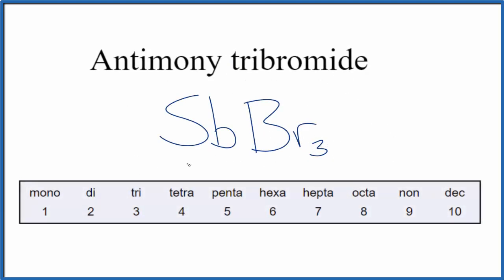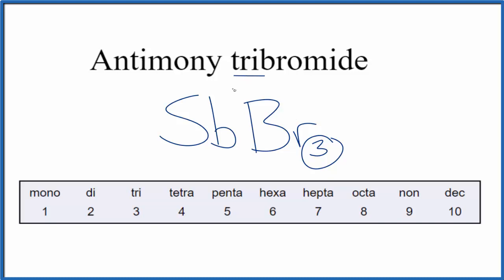If you were given the formula SbBr₃ and asked to write the name, you would know that you have a metalloid and a nonmetal so it's going to be molecular, and you'd have to use the prefix 'tri' when you write the name. This is Dr. B with the formula for antimony tribromide — thanks for watching.